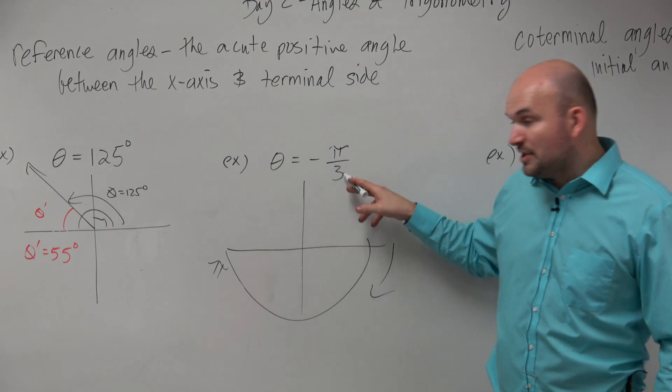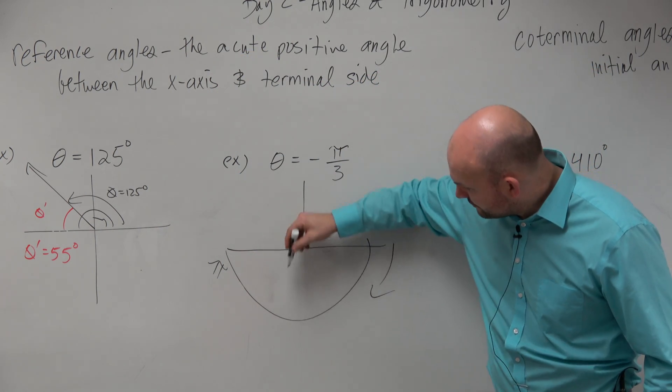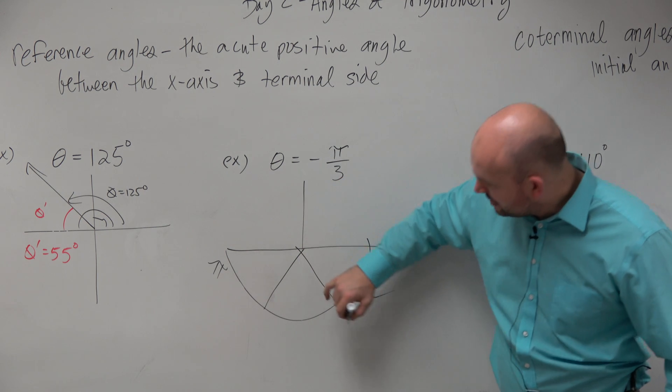So here to here is π, but it's broken up into thirds. Let's kind of forget about that for a second and let's break it up into thirds.